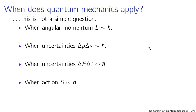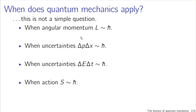h-bar is the fundamental scale of quantum mechanics and it appears not only in the context of angular momentum. Planck's constant has units of angular momentum, so if your angular momentum is of order Planck's constant or smaller, you're in the domain of quantum mechanics. The uncertainty principle also applies here: the uncertainty in the momentum of a particle times the uncertainty in its position, if comparable to Planck's constant, puts you in the realm of quantum mechanics.